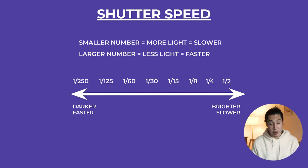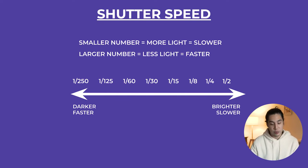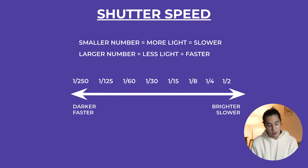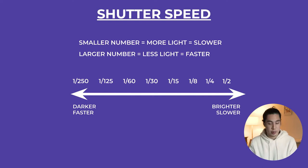These three main components of the exposure triangle all affect each other, and you have to understand each aspect to really manipulate your camera and your image at the end of the day. To sum up shutter speed: smaller number means more light, which means a slower shutter speed; a larger number means less light, which means a faster shutter speed. As you can see in the moving scale: 1/250 means a darker image but a faster shutter speed, and on the other end, half a second gives a brighter image but a slower shutter speed.